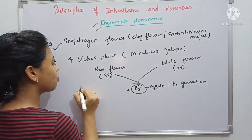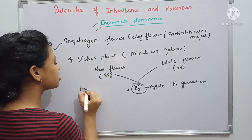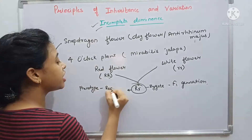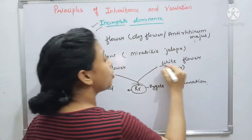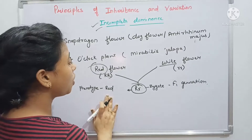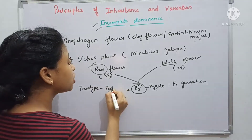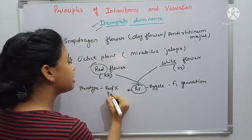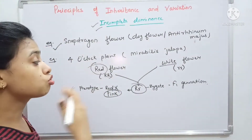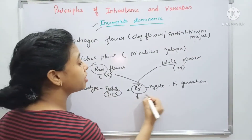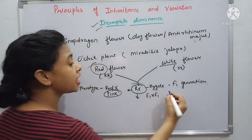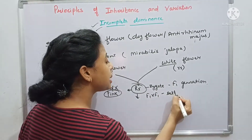According to the law of dominance, what should the phenotype of this F1 flower be? It should be red, because red is dominant here and white is recessive. But what actually happened? The color of this flower turned out to be pink. So we took this F1 generation and did selfing.